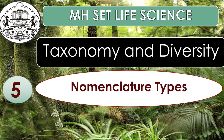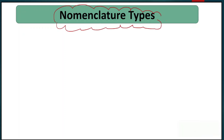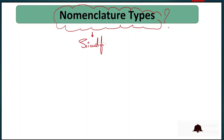Hello students, welcome back. Today we are going to discuss nomenclature types, which is our fifth session of taxonomy and diversity. Let's start today's session. To understand nomenclature types, first we need to see the characters of the organism whenever we have to keep a scientific name.